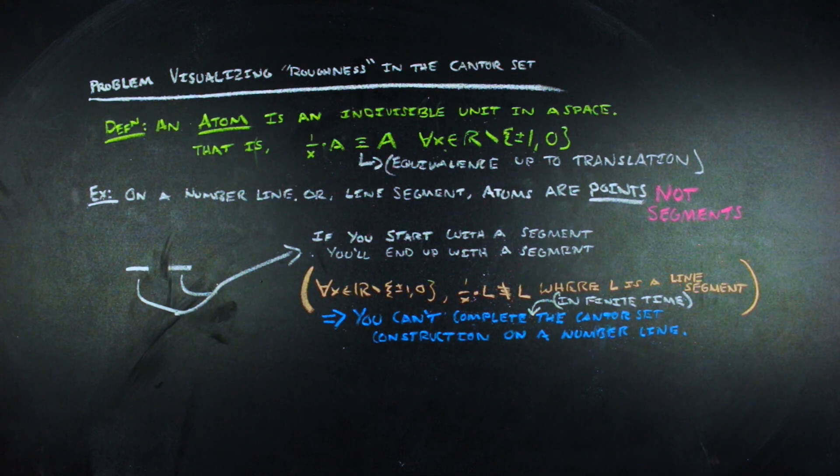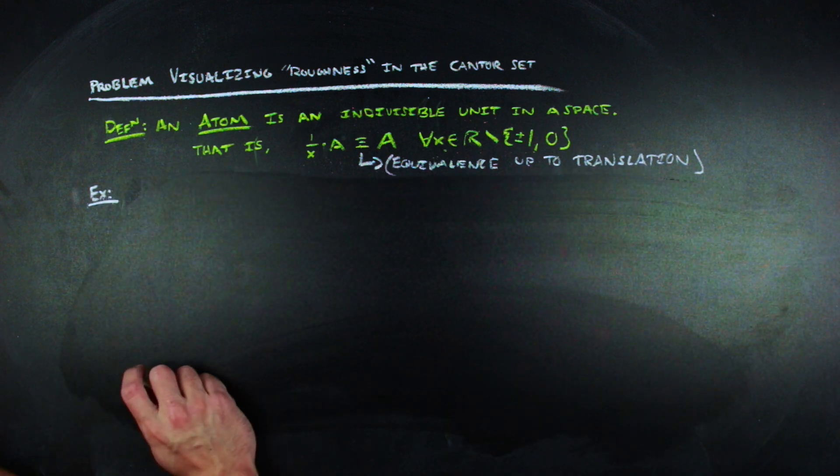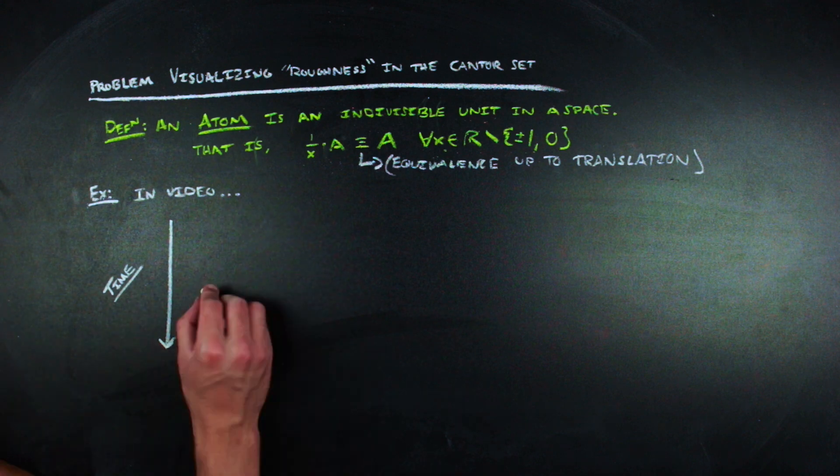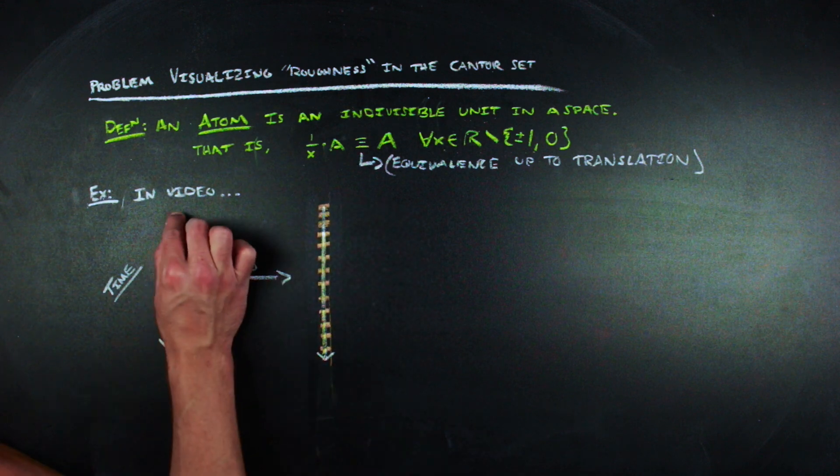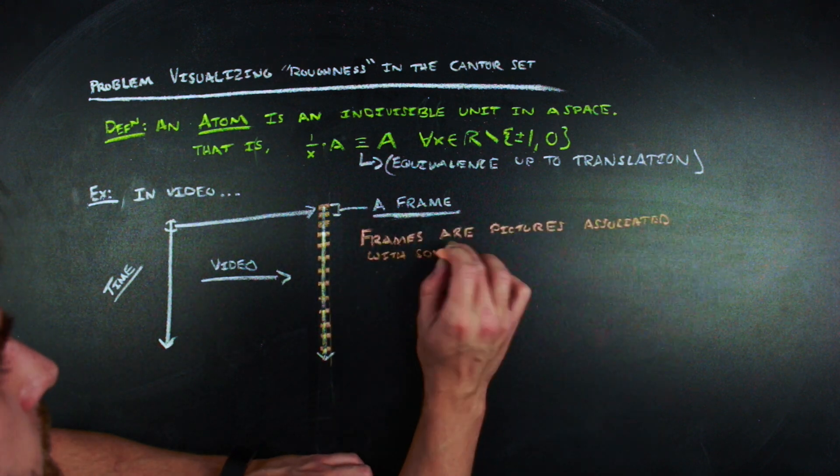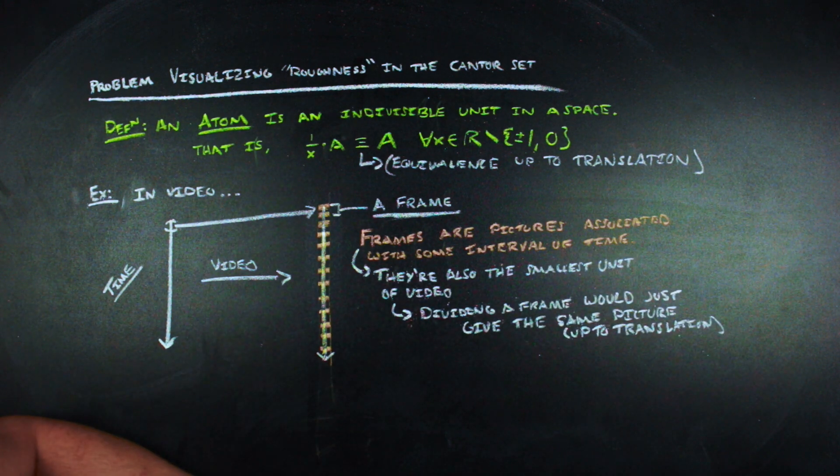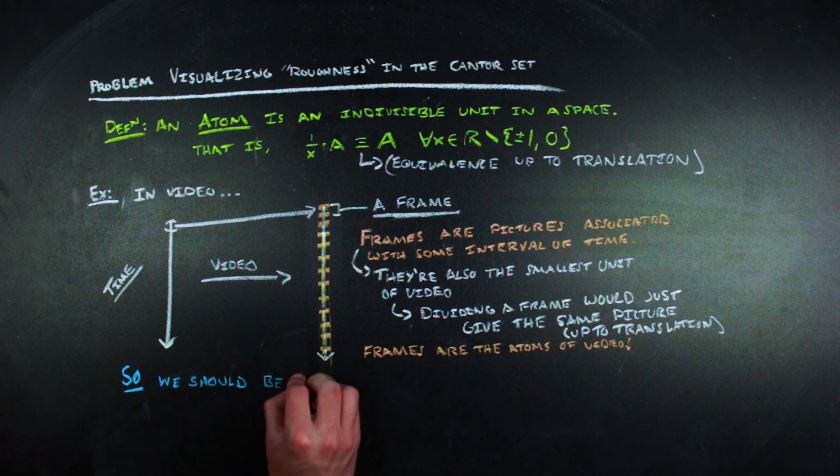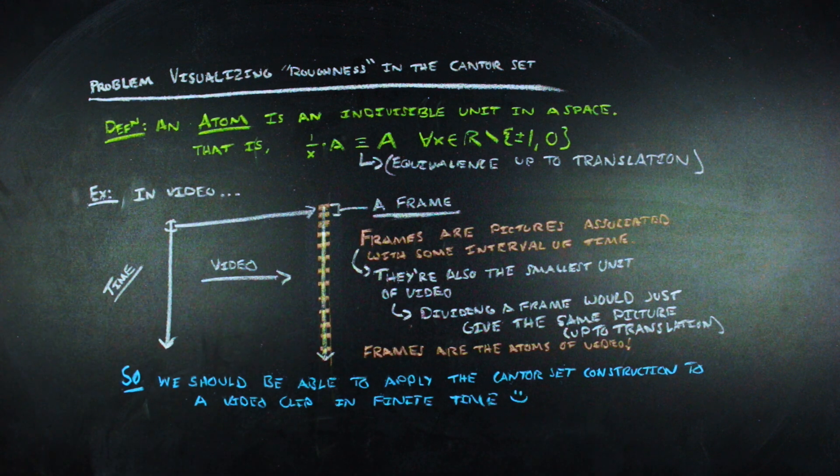The reason I thought videos would be a good vehicle for visualizing this construction and the relation between points in the resultant mathematical object of this construction is that the same isn't true for videos. Take an abstract mathematical view of what a video is, and that will lead you to a function that takes points on the number line to a discrete number of line segments, where each of these line segments corresponds to a frame. The topology of the line is not retained in this mapping. You can't break up a frame. So frames are the atoms of a video, whereas a point is an atom of the real line. And since we can break down a video into frames in a finite number of steps, we will be able to complete the Cantor set construction on the video in a finite amount of time.